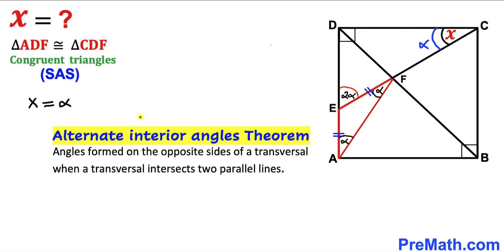Now let's recall the alternate interior angles theorem. According to this theorem, angles formed on opposite sides of a transversal when it intersects two parallel lines are congruent. In this diagram these two are our parallel lines and EC is our transversal. Therefore this angle is congruent to this angle since they are alternate interior angles. If this angle is 2 alpha, then this angle has got to be 2 alpha as well.